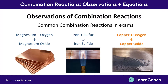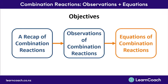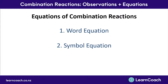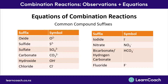It's really good to get a solid grasp on these three common combination reactions and the observations made during them. You are also often asked in exams to write equations for combination reactions. There are three steps: write the word equation, write the symbol equation, and balance the equation. Before writing the word equation, it helps to know the common suffixes of compounds — for example, combining something with oxygen gives an oxide, with sulphur gives a sulphide, and so on. This table is available in the resource booklet given during exams.